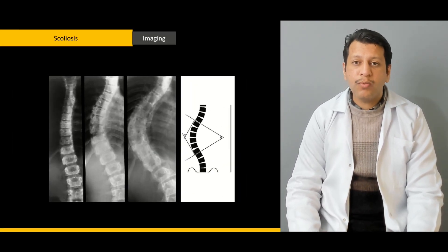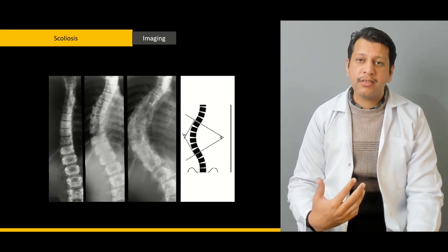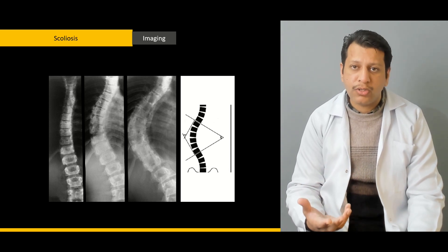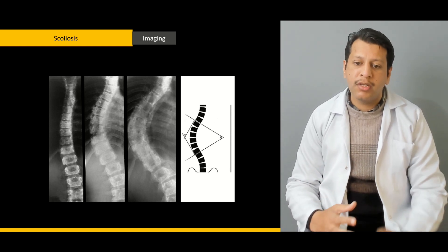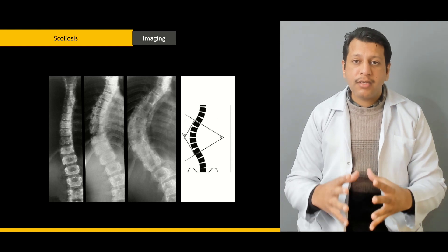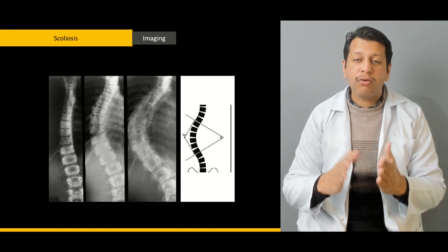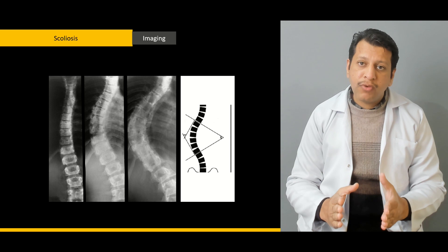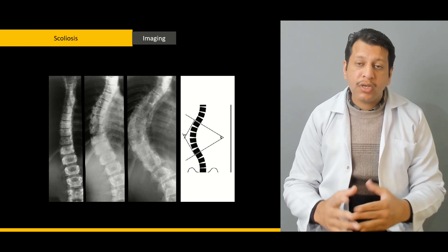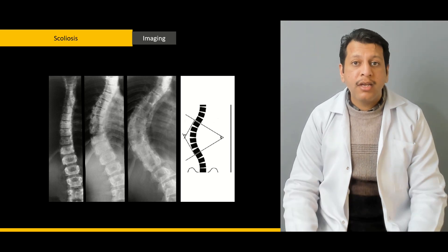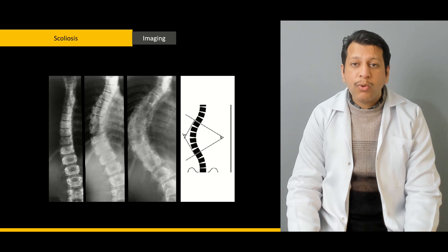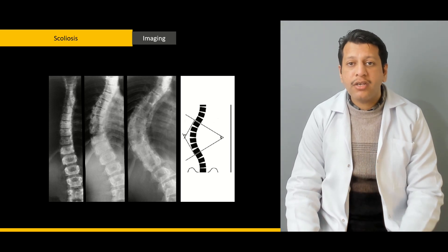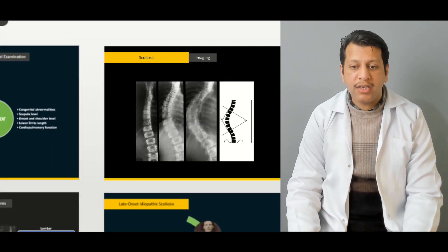With any disease, once you've taken the history and examination, you go for some form of radiological as well as biochemical workup. We will be discussing in detail how to get the x-rays, how to get the compensatory views or lateral and forward bending views, and how to calculate the Cobb angle. Once we calculate the Cobb angle, we will cover the different indications for getting a CT or MRI as well.